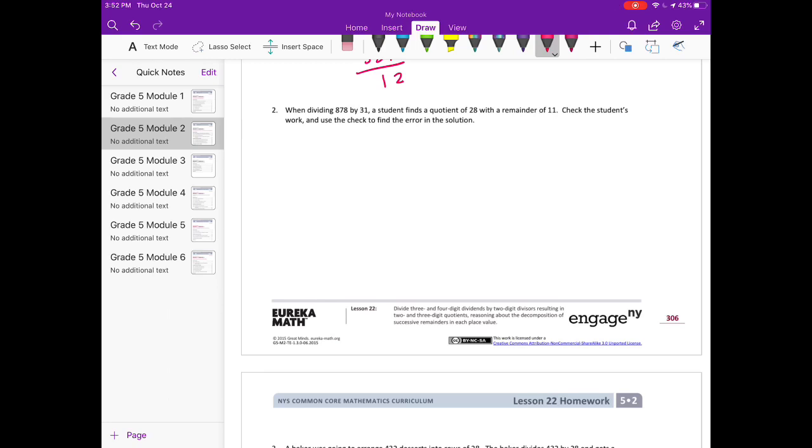When dividing 878 by 31, a student finds a quotient of 28 with a remainder of 11. Check the student's work and use the check to find the error in the solution. So they did 878 divided by 31 and got 28 with a remainder of 11. So we're going to do 28 times 31. And 28 times 31 is equal to 868. And then we need to add the remainder to that. So 868 plus 11 would be 879. That does not equal 878. So their error must be somewhere within the remainder. It could be, it's just one off, so it's probably remainder 10.